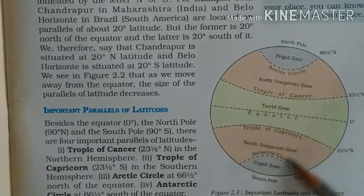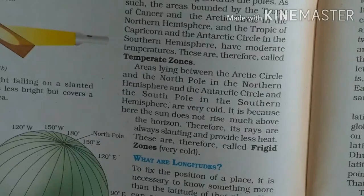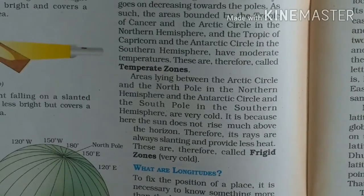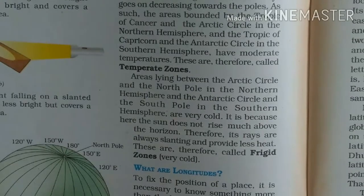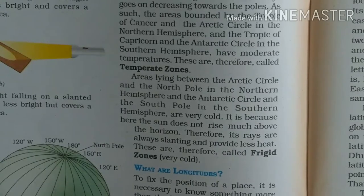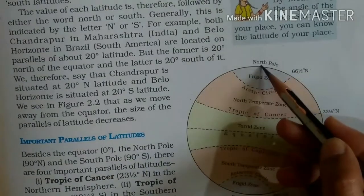Southern Hemisphere में Antarctic Circle पर Sun की rays जो है वो decrease होती जाती है, तो यहाँ पर ज़्यादा heat नहीं होती है। इसलिए इसे Temperate zone कहा जाता है। बीच वाला जो zone है वो Torrid zone है। Arctic Circle और Antarctic Circle वाले Temperate zone कहलाएंगे। Arctic Circle जो Northern Hemisphere में है और Antarctic Circle जो Southern Hemisphere में है, उधर का आगे का एरिया बहुत cold होता है क्योंकि Sun की rays वहाँ पर बहुत कम पहुँचती है। इसलिए उसे Frigid zone कहा जाता है।